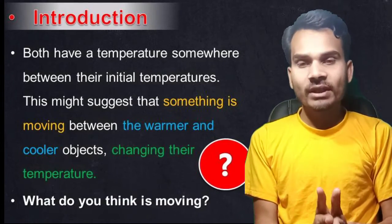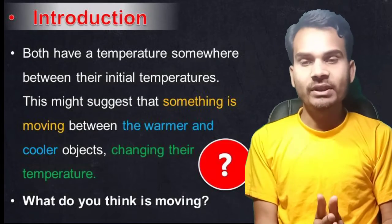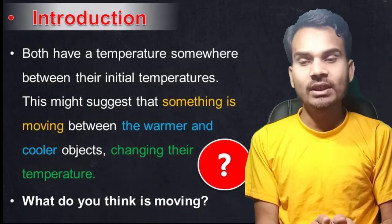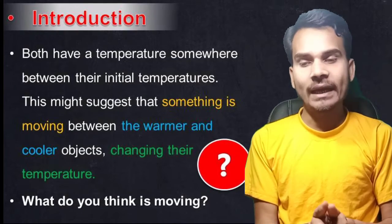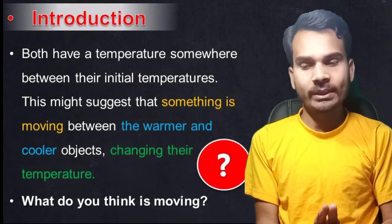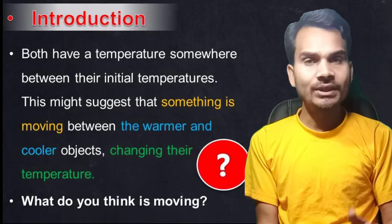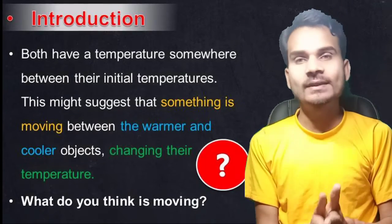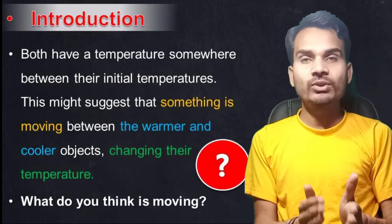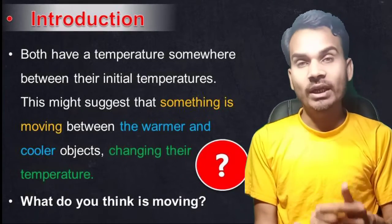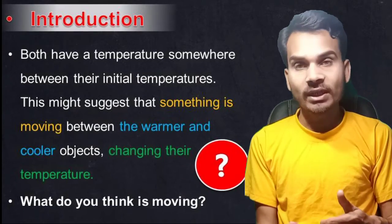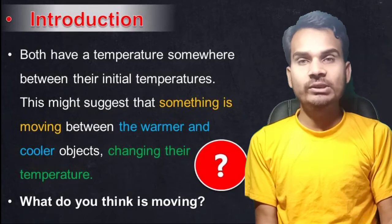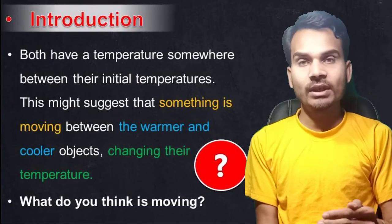Both objects reach a temperature somewhere between their initial temperatures. This might suggest that something is moving between the warmer and cooler object, changing their temperature. When the ice cube is warming up and the hot coffee or tea temperature is lowering, then the two temperatures come closer together.